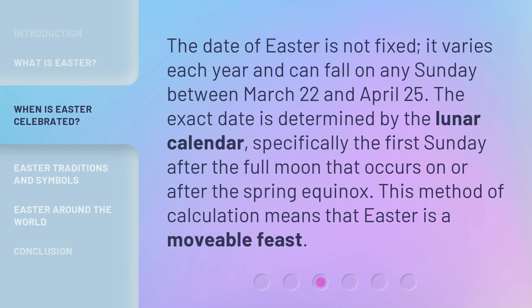The date of Easter is not fixed. It varies each year and can fall on any Sunday between March 22nd and April 25th. The exact date is determined by the lunar calendar, specifically the first Sunday after the full moon that occurs on or after the spring equinox. This method of calculation means that Easter is a movable feast.